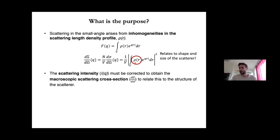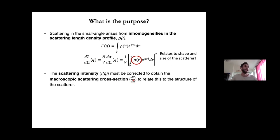What actually happens when we do one of these experiments is that we get some scattering intensities that come from your sample plus some other things. So what we have to do is apply some corrections to determine the microscopic cross section, which will ultimately be the data that we have to analyze. Today we're going to talk about how we get from this scattering intensity to this microscopic scattering cross section.